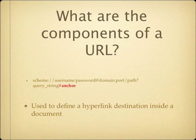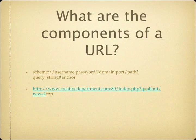The anchor is used to define a hyperlink destination inside a document. If you've ever been to a webpage where you click something and it jumps you halfway down the page, and then there's a 'return to top' button — those are using anchors. To access the about/news page on our website: protocol is HTTP, domain is creativedepartment.com, port is 80, the file or path is index.php, question mark Q defines the query string variable Q, the value is about/news, and #top refers to an anchor that would bring you to the top of the page.